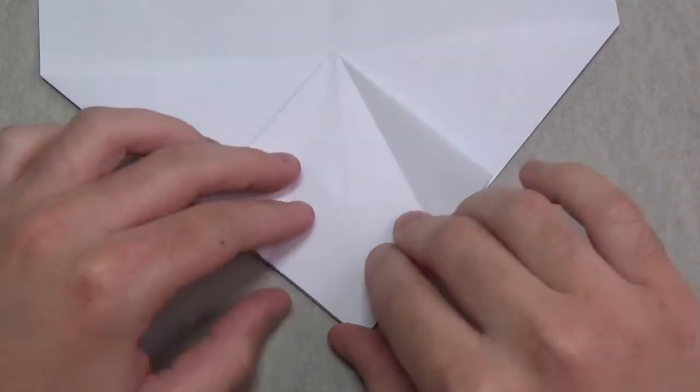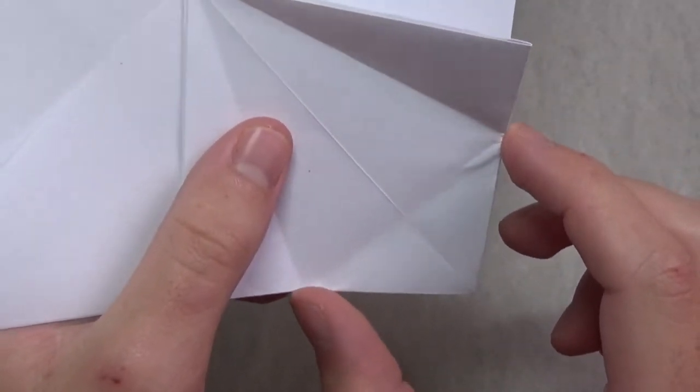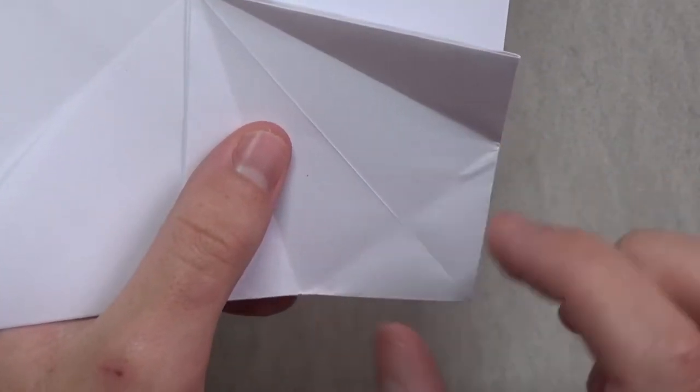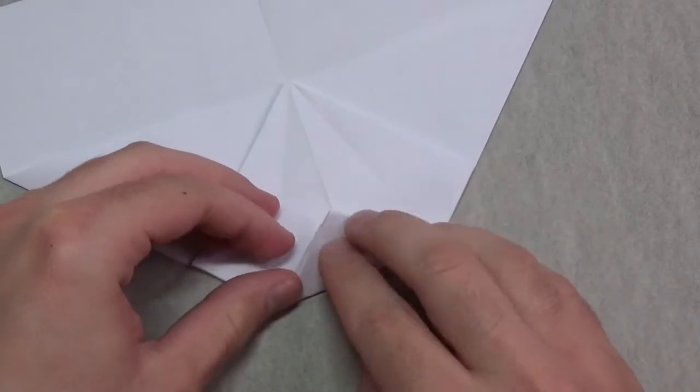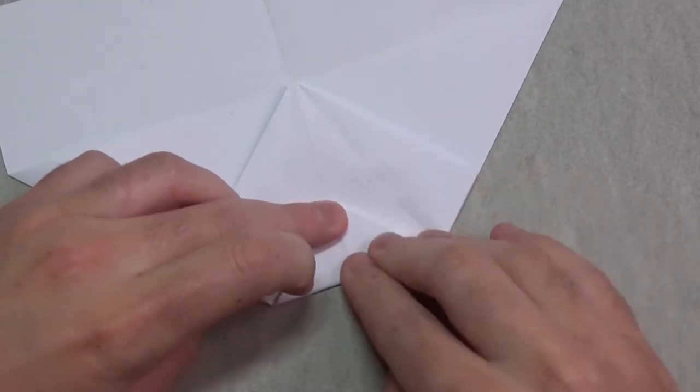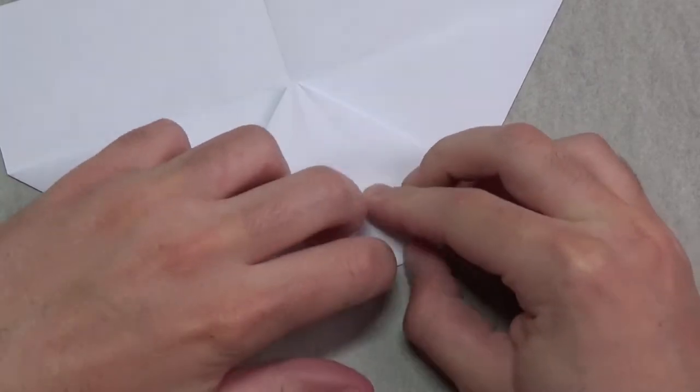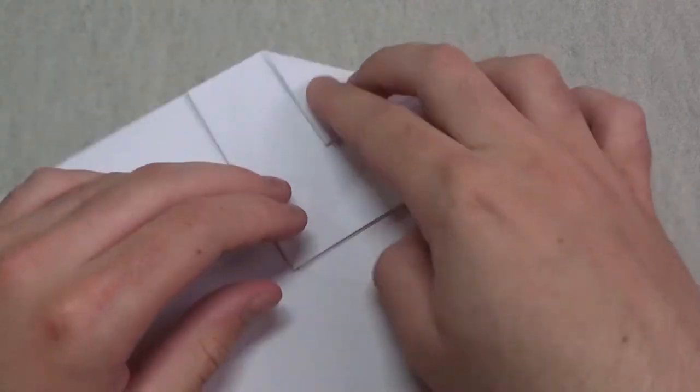Now rotate like this, and we're going to fold this point up in between these two points. Release the creases at the edges. Make sure that this point aligns with the middle line. Now keep that folded and rotate like this.